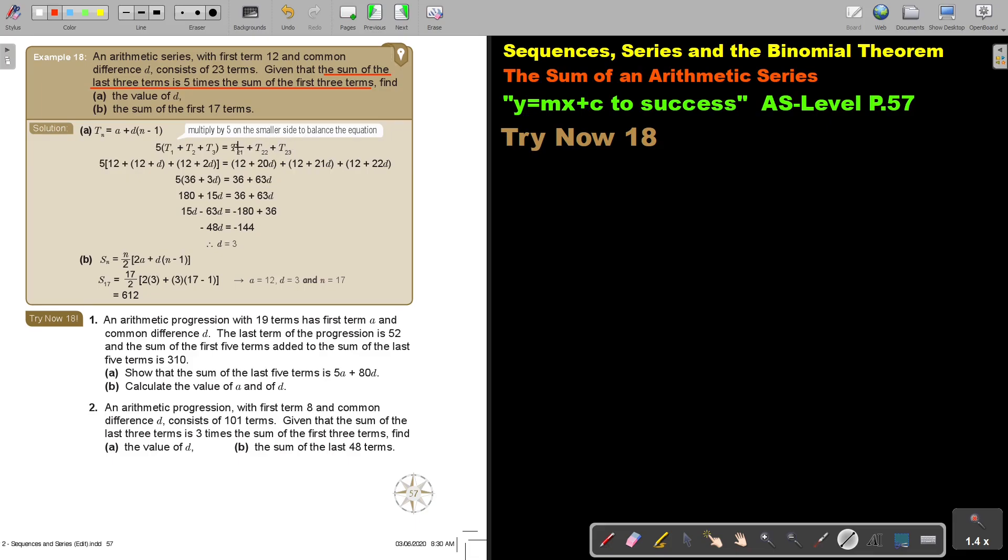So the first three terms, the last three terms. Because there is 23, 22, 21. First three: 1, 2, 3. But this is the sum of the last three terms is 5 times. So this is 5 times more. But because I put the equation, I must put the 5 on the other side so that the two sides are equal.